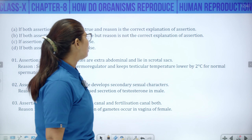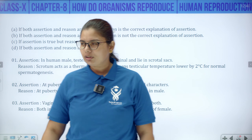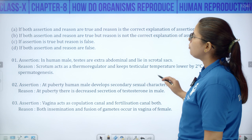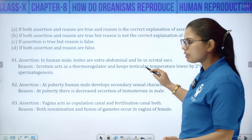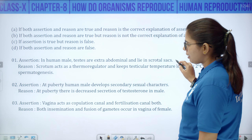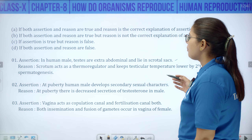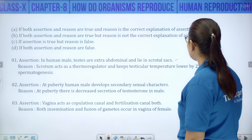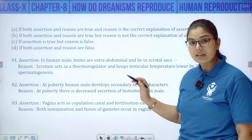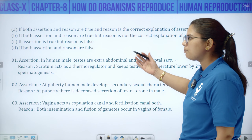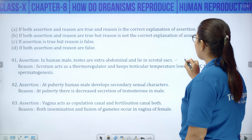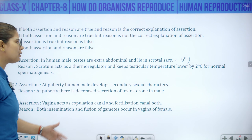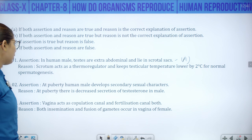Now let us come to some questions based on the topics we have studied. Assertion-Reason: In human males, testes are extra-abdominal — outside the abdomen — and lie in the scrotal sac. Reason: Scrotum acts as a thermoregulator and keeps the testicular temperature lower by 2 degrees Celsius for spermatogenesis. Both assertion and reason are correct and reason explains the assertion — so the answer is option A.